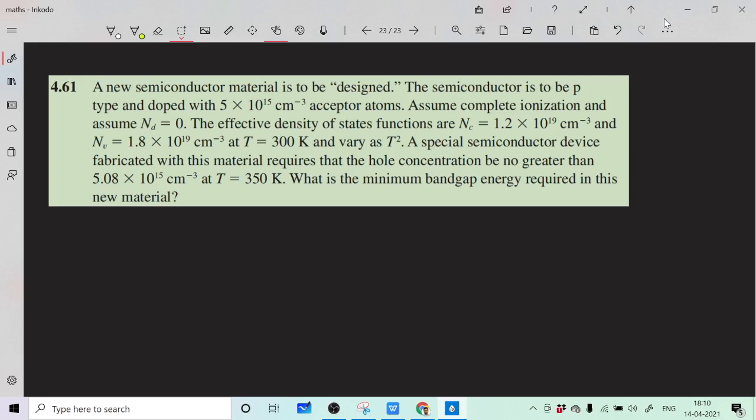It states that a new semiconductor material is to be designed. The semiconductor is to be p-type and doped with 5×10^15 per cm³ acceptor atoms. Assume complete ionization and Nd = 0. The effective density of states functions Nc and Nv are given at T = 300K and vary as T².